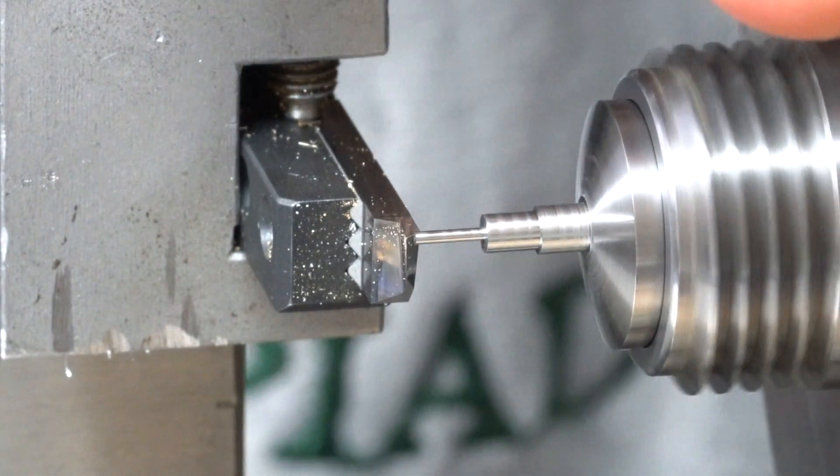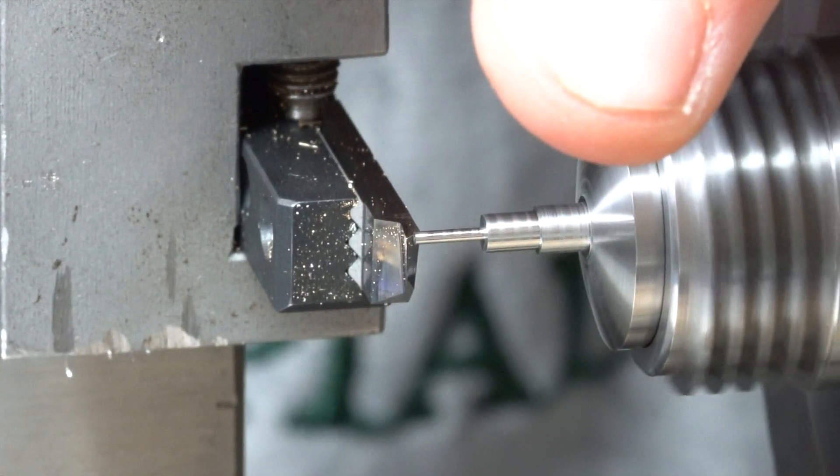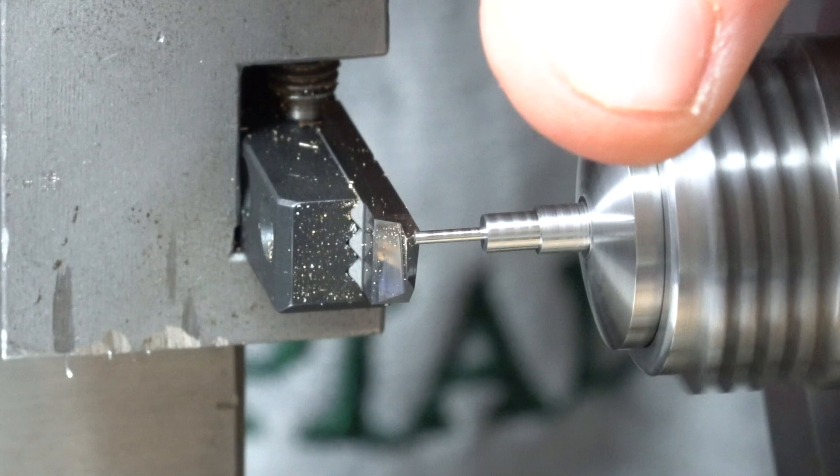Here I'm putting a slight lead chamfer on the end of the threading diameter. This just makes it easier for the rollers to start the thread.